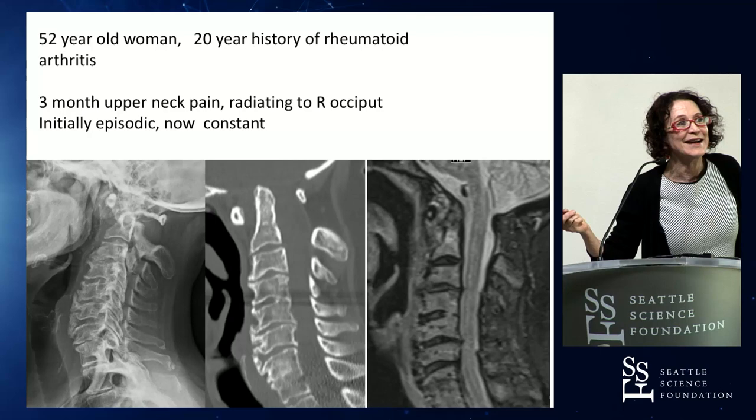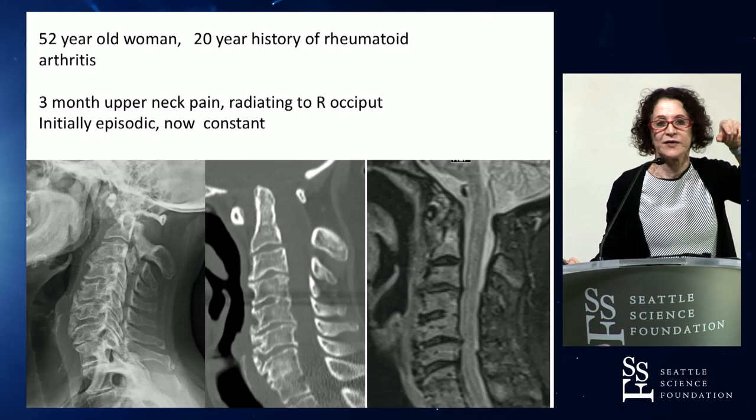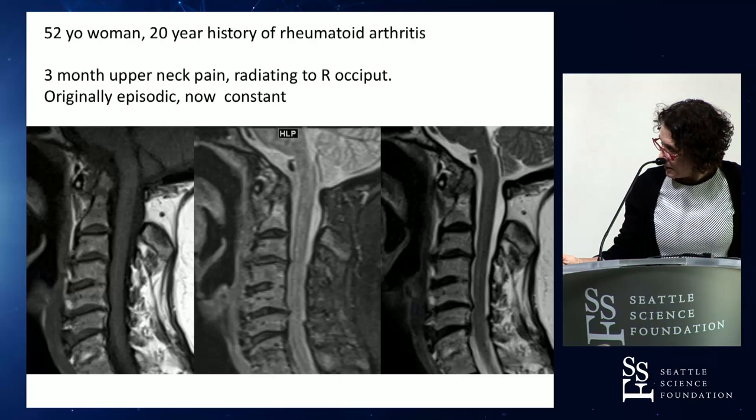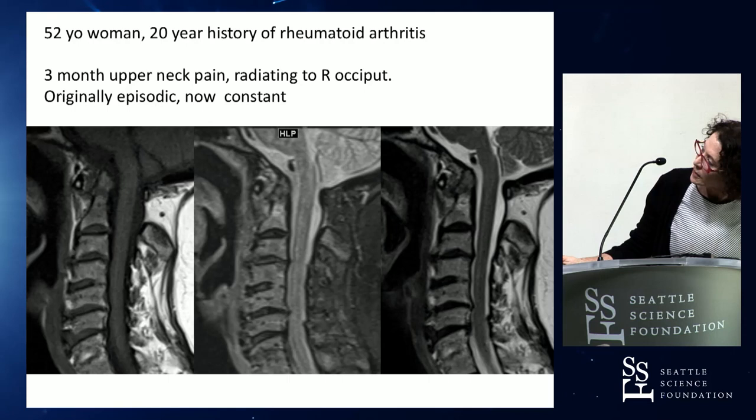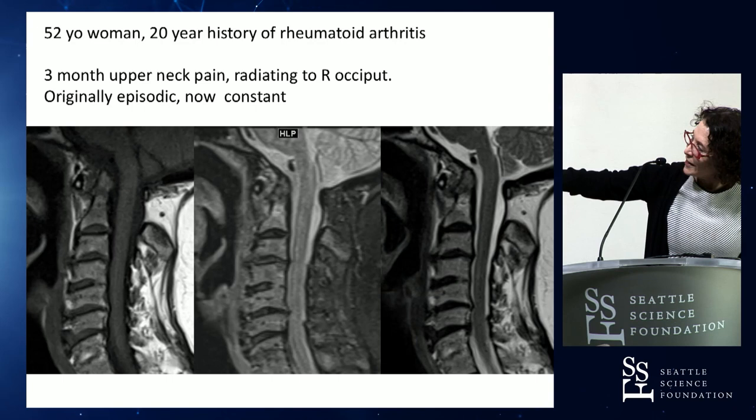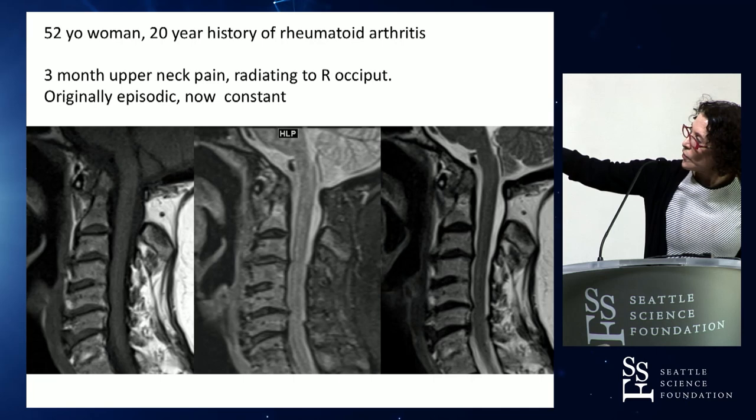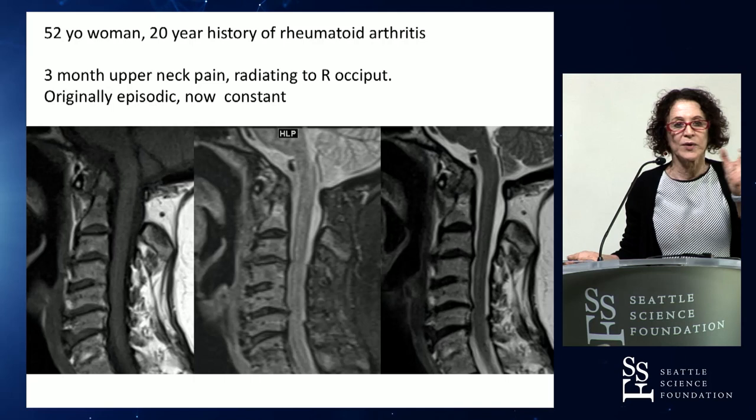Behind the dens there's a soft tissue pannus, but most of this pannus is actually anterior to the dens with a widened ADI distance. If you look at the series of MRs - on your left is a T1, the middle is a STIR-type sequence, and on the right is a T1 - for her there's nothing in the canal. You're not worried about cord, but she has this unstable ring of C1 which probably is not moving but is clearly causing her pain.